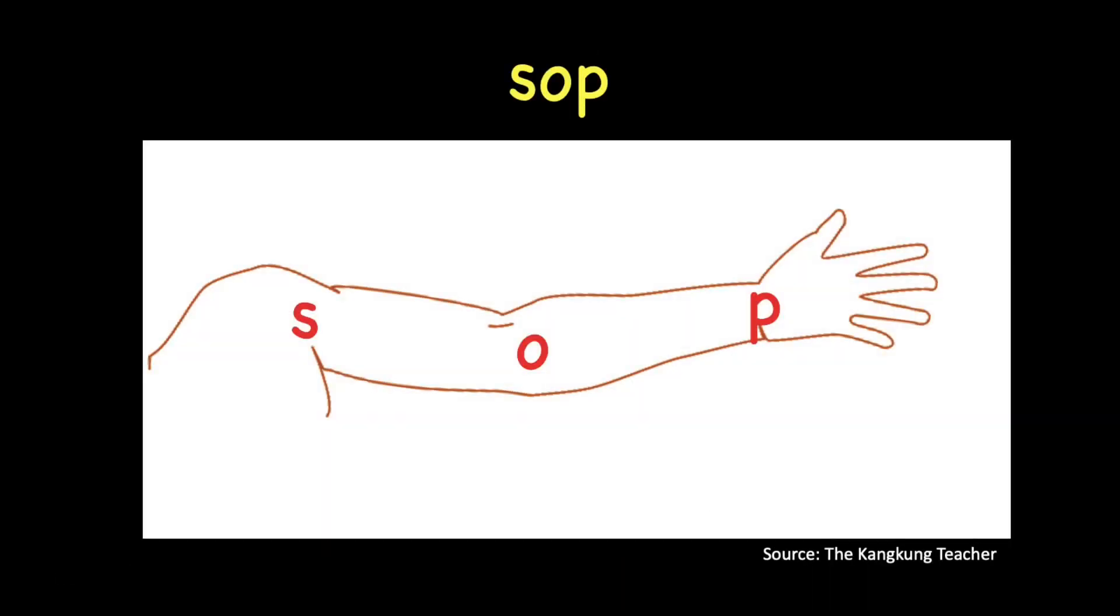Now, let's try another word. We have S, O, P. How do we read this word? The first sound is S. Second sound is O. Third sound is P. S, O, P. S, O, P.